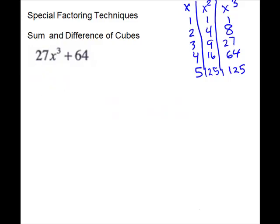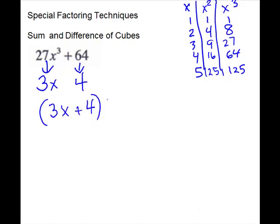For this problem we have two terms, exponent of three — we just have to make sure that we have perfect cubes here. Twenty-seven: yes, that's a perfect cube, our cube root is three, and an x. Sixty-four: our cube root is four. So we'll use these pieces with the sign of the problem: three x plus four. Second set of parentheses will be a trinomial. For your signs: the first sign will be the opposite. Last sign will be plus. Then we go back to our roots: take the first root times itself — 3x times 3x gives us 9x squared. We'll take the first root times the second one: 3x times four gives us 12x. The last root times itself: four times four is 16.